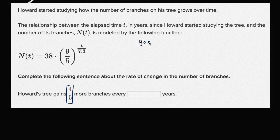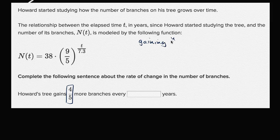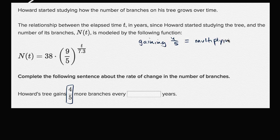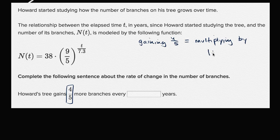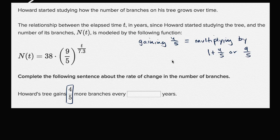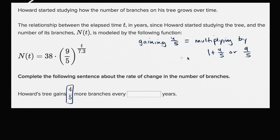So gaining 4 fifths is equivalent to multiplying by, you're gaining 4 fifths of what you already are. You're not just gaining the number 4 fifths. You're getting 4 fifths of what you already are. So that's the equivalent of multiplying by 1 plus 4 fifths, or 9 fifths. So gaining 4 fifths is the same thing as multiplying by 9 fifths. If I'm 5 years old and if I gain 4 fifths of my age, I would gain 4 years to get to be 9 years old, which means I've multiplied my age by 9 fifths.